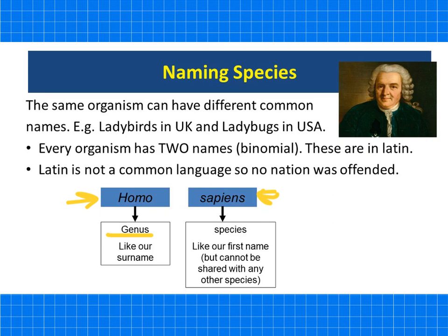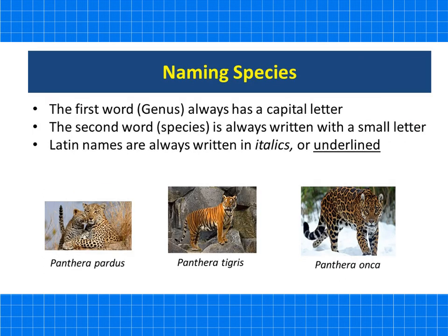Genus comes first, then species. There are rules: the first word, genus, always has a capital letter. The second word, species, is always written with a lower-case letter. Latin names are always written in italics or underlined. For example, in the genus Panthera: Panthera pardus is the leopard, Panthera tigris is the tiger, and Panthera onca is the jaguar.